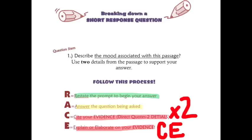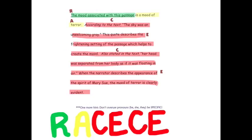What the word cite means is when you use direct quotes to support your answer. For example, notice in this sample response: we have restated the prompt, we have answered the question, and we have cited and explained our evidence twice. So it's R-A-C-E-C-E.